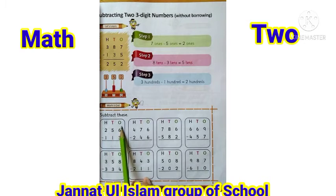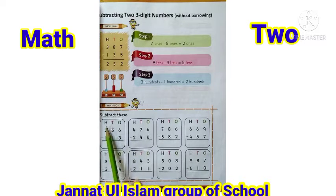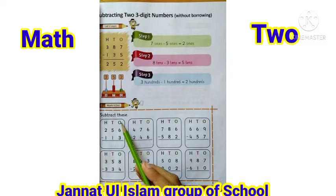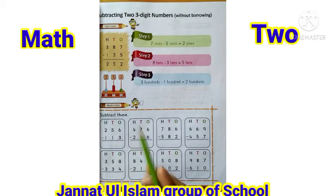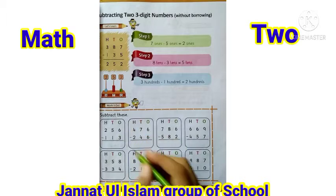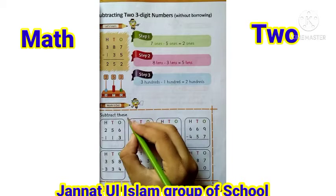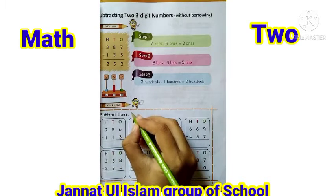سب سے پہلے اوپر آپ کو ones، tens اور hundreds نظر آ رہا ہے۔ بیٹا، ones کے نیچے آپ کو two digits نظر آ رہے ہیں — ایک six اور ایک three۔ سب سے پہلے اوپر والا digit six ہے، تو ہم کیا کریں گے — six lines draw کریں گے۔